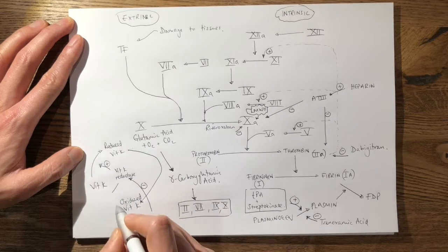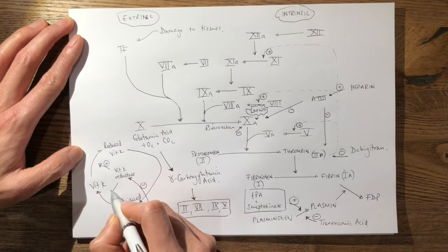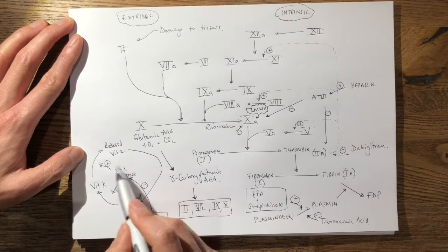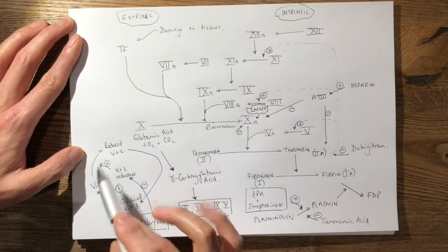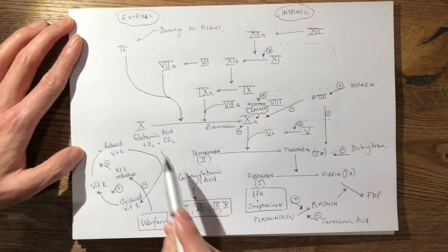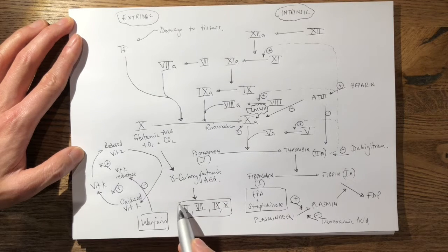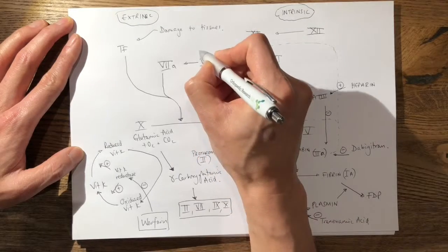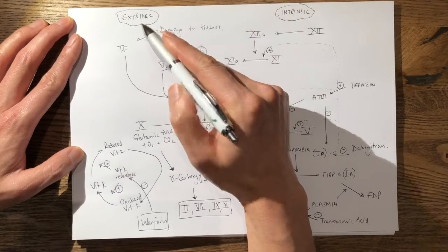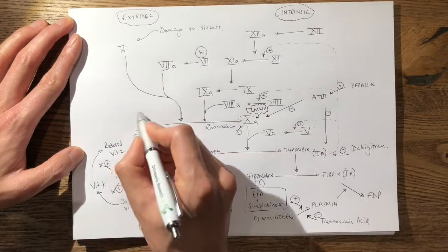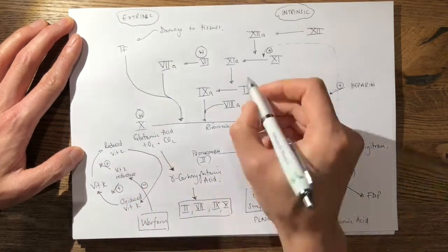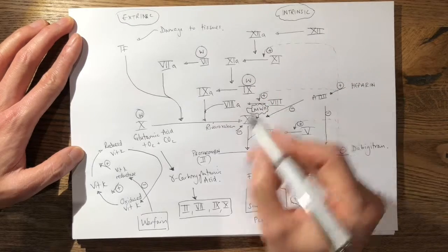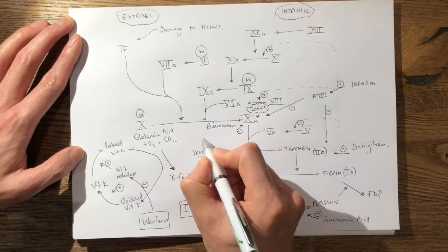Oxidized vitamin K is converted back to vitamin K by vitamin K reductase. So warfarin itself is a direct inhibitor of this enzyme, vitamin K reductase, which in turn is essential — through the gamma carboxylation of glutamic acid — for the components of factors 2, 7, 9, and 10. On the coagulation cascade, you can see that warfarin acts in the extrinsic pathway at factor 7, also at the beginning of the common pathway at factor 10, also at factor 9 in the intrinsic pathway, and finally at prothrombin, which is factor 2.